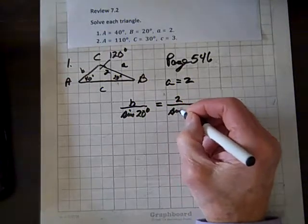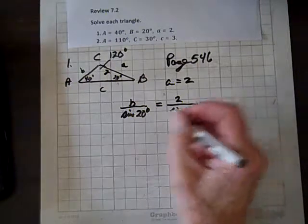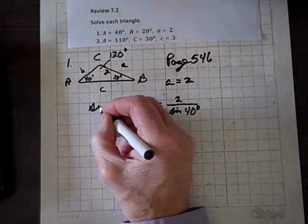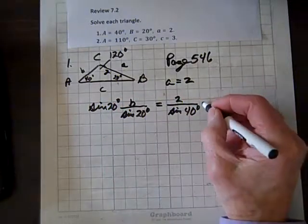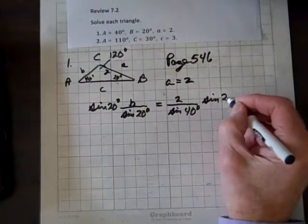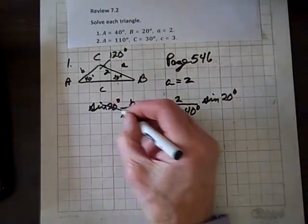If we multiply both sides by sine of 20 degrees, these divide out.